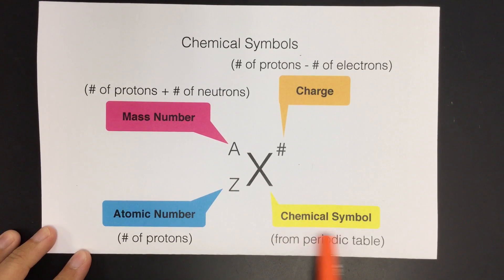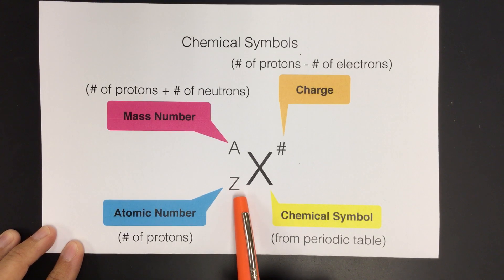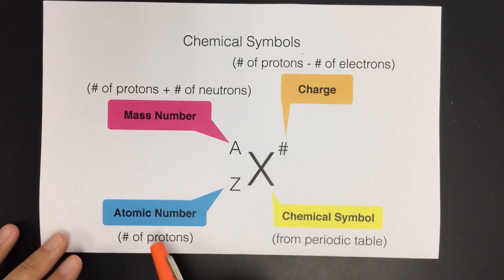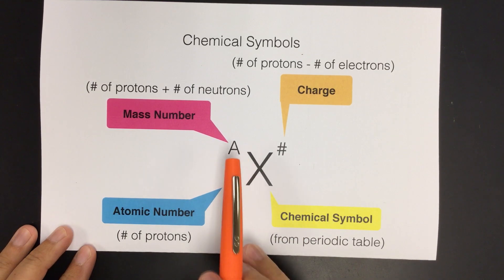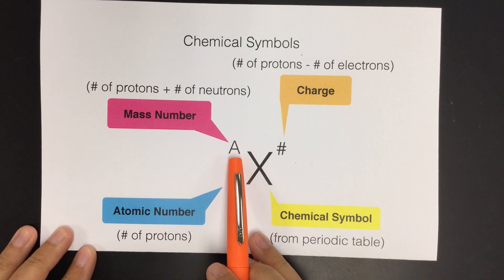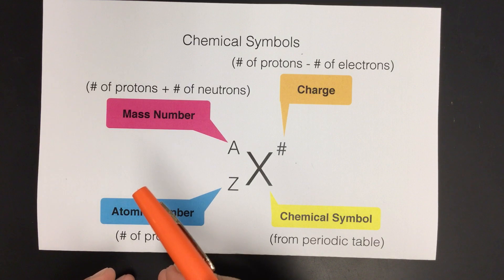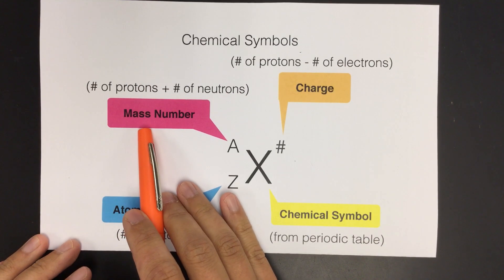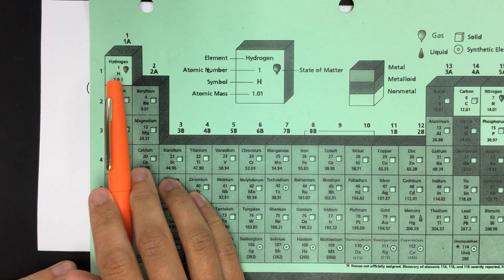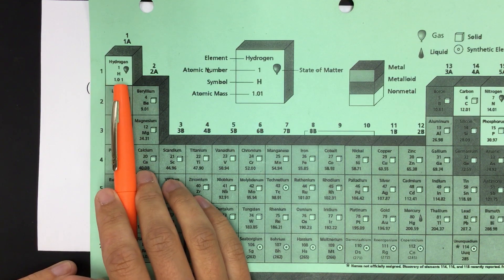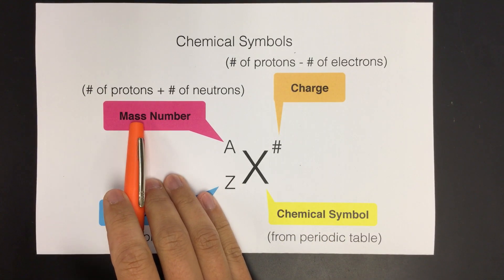We have our chemical symbol, which is the symbol from the periodic table, and then we have the bottom left where it says Z. This is the atomic number from the periodic table, which is also the number of protons that are in that element. And then we have the top left number using the letter A, which is the mass number. This number tells you the number of protons and the number of neutrons combined. So it is different from the atomic mass number on the periodic table — it's related, but it's not that number. You will never use those decimal numbers for your chemical symbols homework; you only get to use whole numbers in mass numbers.